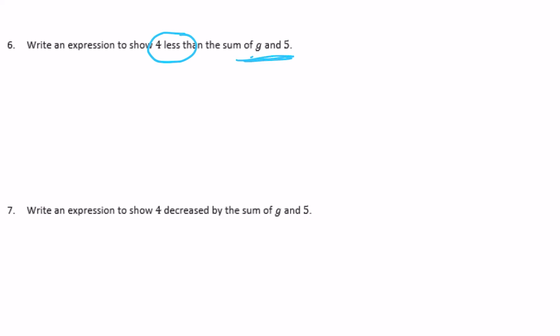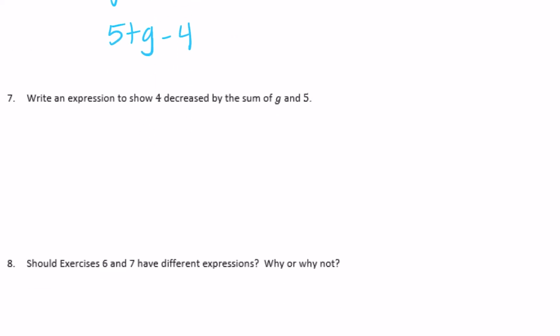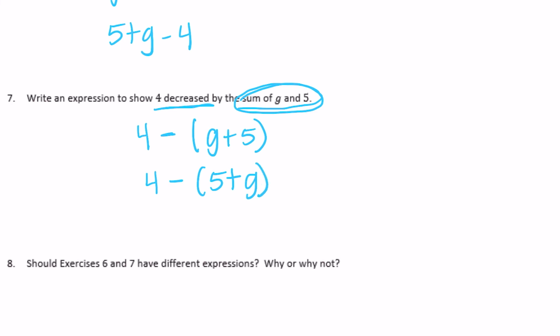Number 6: write an expression to show four less than the sum of g and five. We're taking four away from g plus 5, so: g plus 5 minus 4. No parentheses needed since we do the addition first anyway. You could also write 5 plus g minus 4. Number 7: write an expression to show four decreased by the sum of g and five. Now four comes first, decreased by the sum of g and 5 in parentheses: 4 minus (g plus 5), or 4 minus (5 plus g).